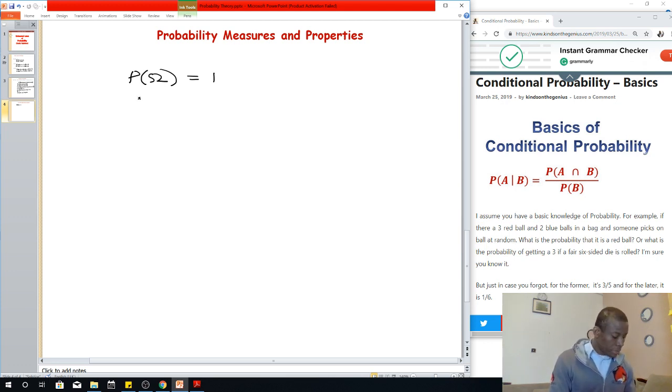The next one says, let's call this two: if A is a subset of the universal state, then probability of A...